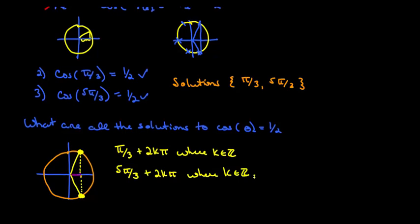So those are all the different angles. If you picked any angle, if you picked any k value, it would generate an angle that would make the cosine of theta equal to 1 half.